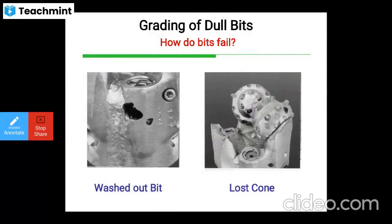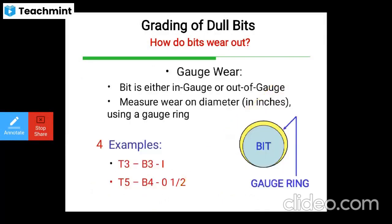You can see the washed-out bit and the lost cone in the diagram — these are examples of grading of dull bits. For gauge wear, the bit is either in gauge or out of gauge, and wear on the diameter is measured in inches using a gauge ring. Example grading: T3, B3, I, T5, B4, 0, 1/2.